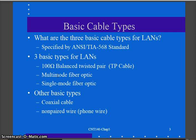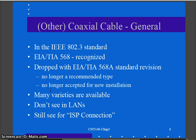We want to take a few minutes on coax and non-paired or phone wire just to touch on them. Coax is grouped into the 'other' category. Once upon a time it was in the IEEE 802.3 standard for Ethernet and was originally recognized by EIA/TIA 568, but as the 568 standard evolved, it got dropped. It's no longer a recommended type of cable and is no longer accepted for new installations.